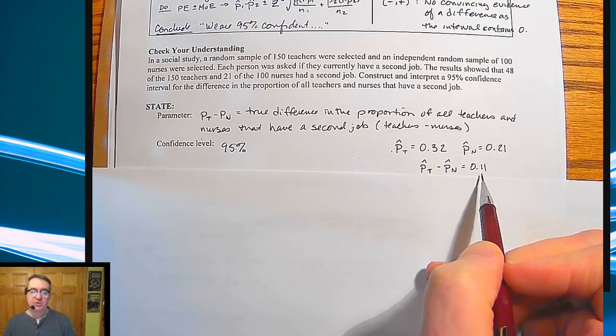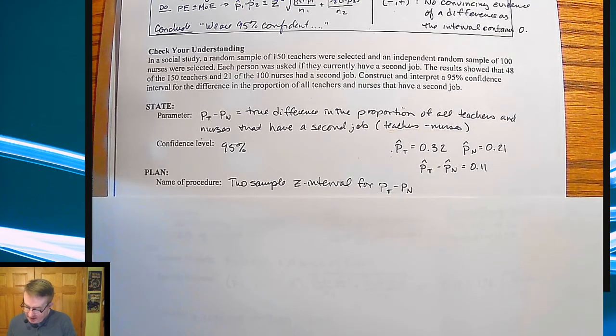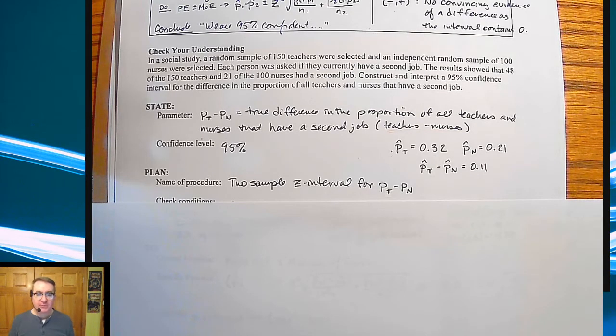Proportion of teachers in our sample that have second jobs is 32%. The proportion of nurses is 21%. And so the difference of those two proportions is 11%. Now for the plan, we're doing a two sample Z interval for P sub T minus P sub N.